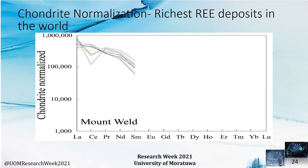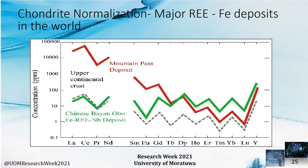This is the richest rare earth element deposit in the world, Mount Weld in Australia, and you can clearly see the scale is in the 100,000 range, which is not the same case in our country. This is the chondrite normalization for the major rare earth element deposit associated with iron ore — the Chinese Bayan Obo ferrous rare earth element deposit, the largest ferrous deposit in the world. Its values are somewhat in the same range as ours, though the economic viability is higher there because ferrous minerals are more abundant. The Mount Pass deposit is also in the 100,000 range.